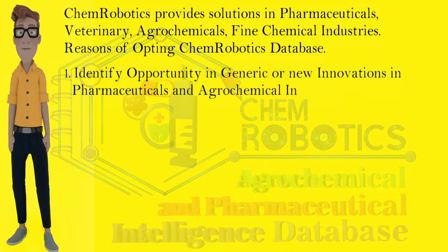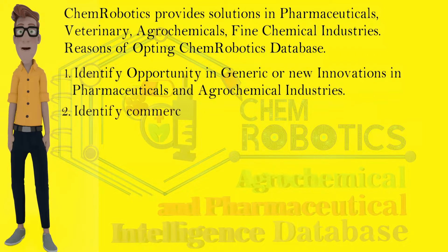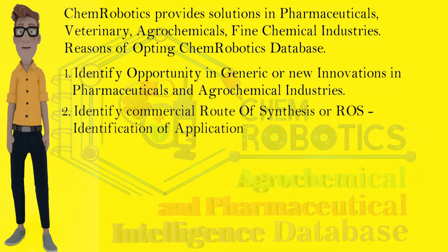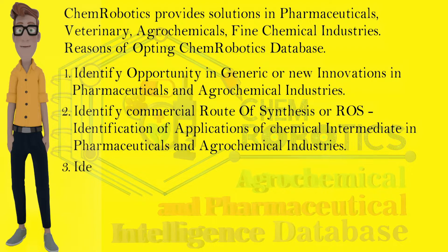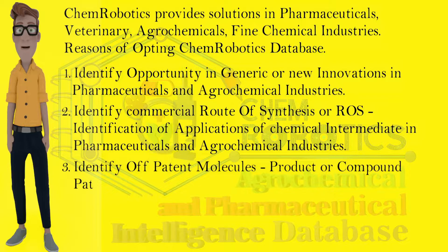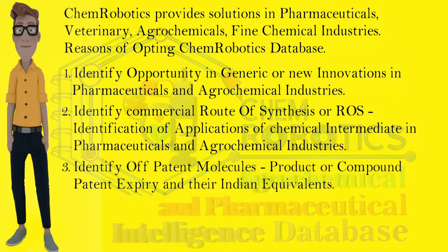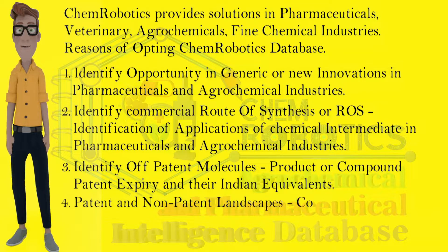Reasons for opting Chem Robotics database: First, identify opportunities in generic or new innovations in pharmaceuticals and agrochemical industries. Second, identify commercial route of synthesis and identification of applications of chemical intermediates in pharmaceuticals and agrochemical industries. Third, identify off-patent molecules, product or compound patent expiry, and their Indian equivalents.